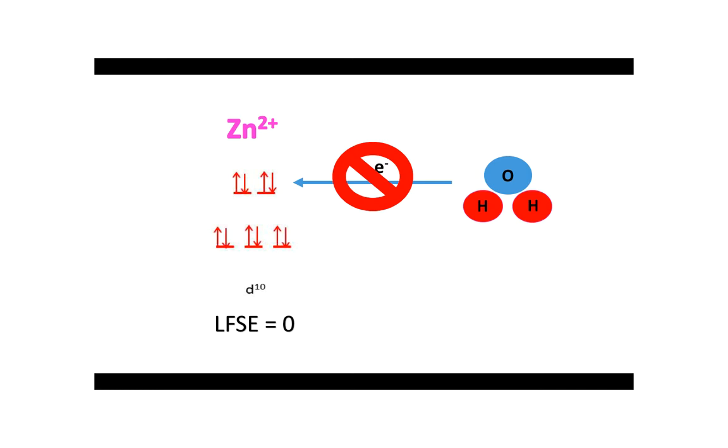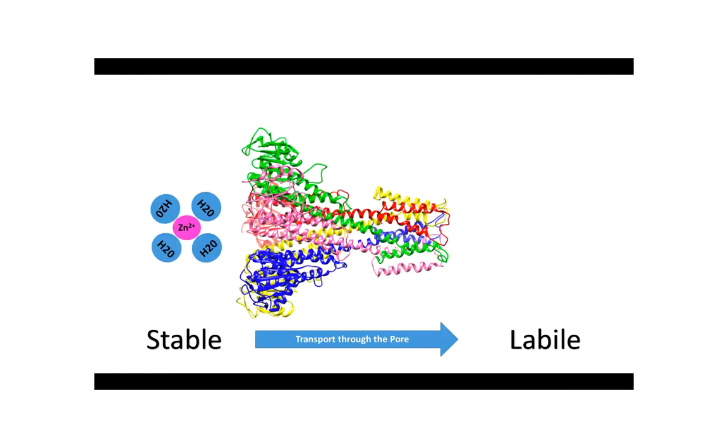For hydrated zinc in the ZntB system, the molecule must be stable enough for transport but also labile once transported in or out of the cell so it can perform the specific cellular function required at that time.